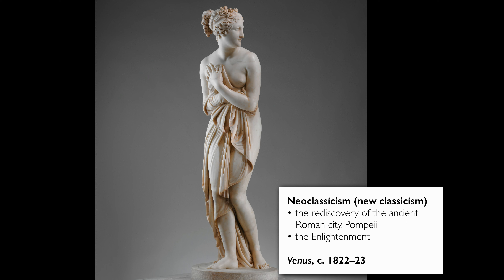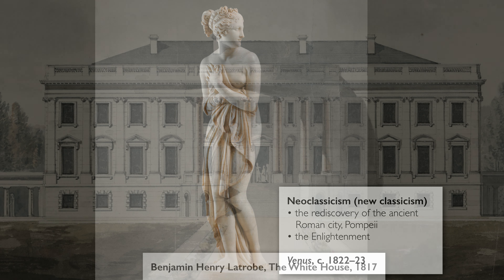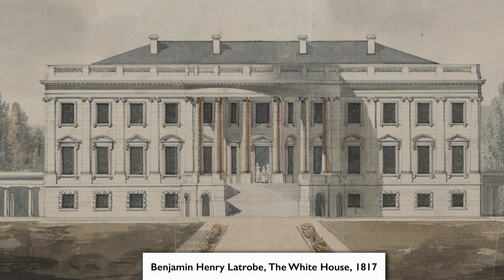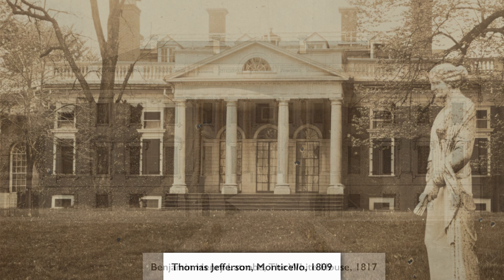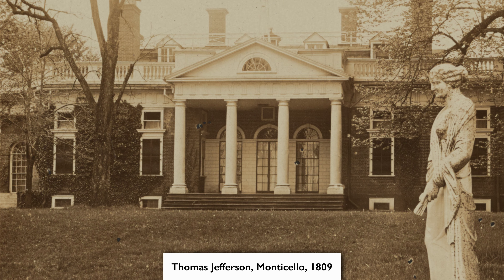But at the same time, there was an intellectual movement taking place which we call the Enlightenment, which would revive the ancient Greek idea of democracy. This is when you think of buildings like the White House and Monticello — all being constructed thinking about the Greco-Roman world.